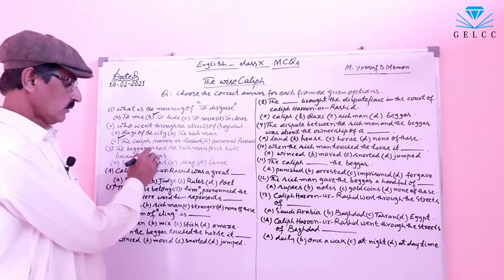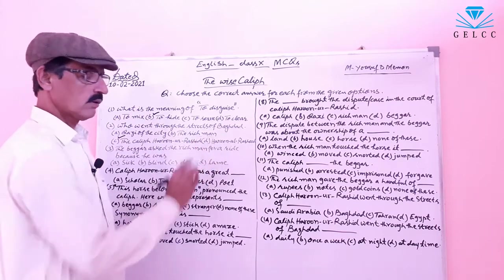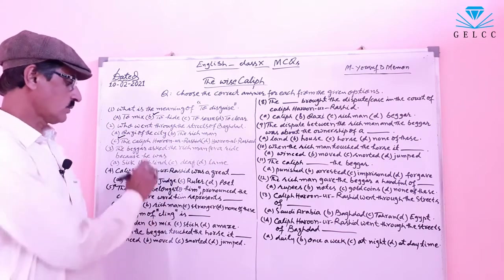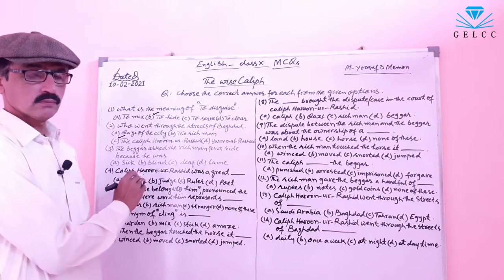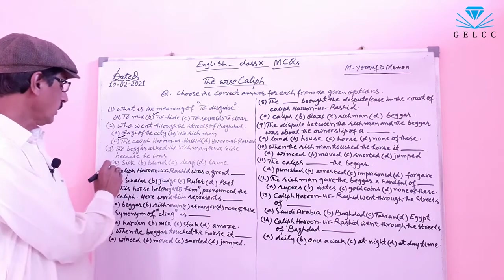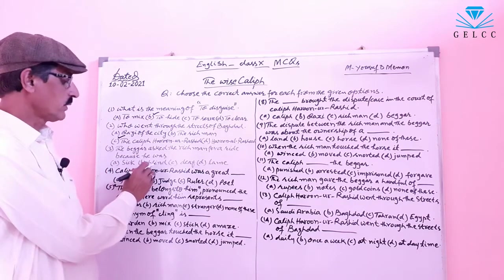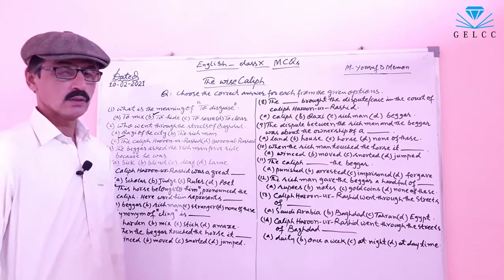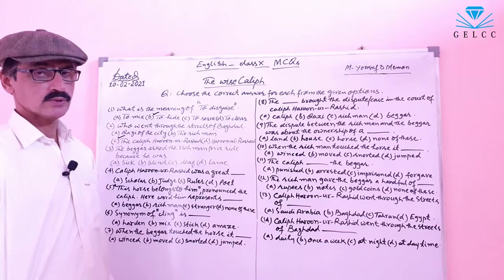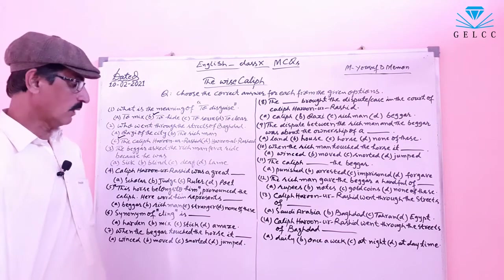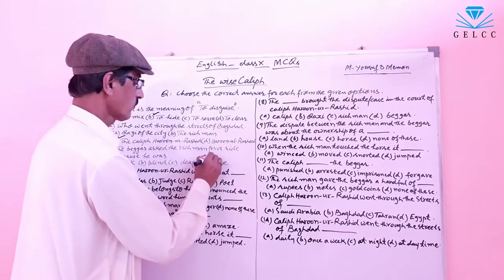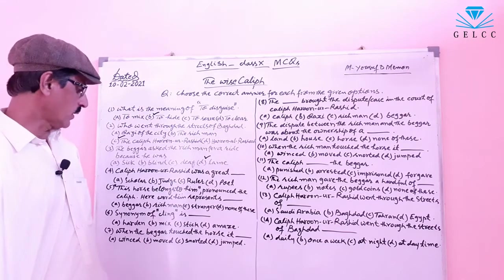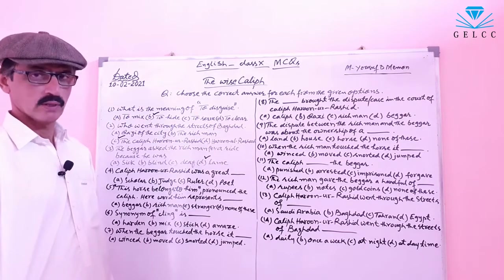Number 3: The beggar asked the rich man for a right because he was lame. The correct answer is option D — lame. The beggar asked the rich man for a right because he was lame.